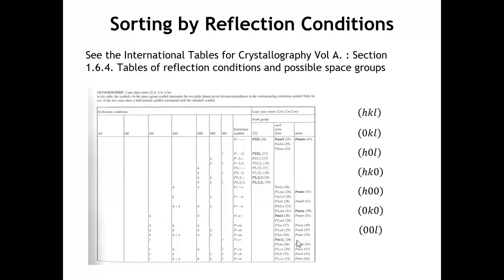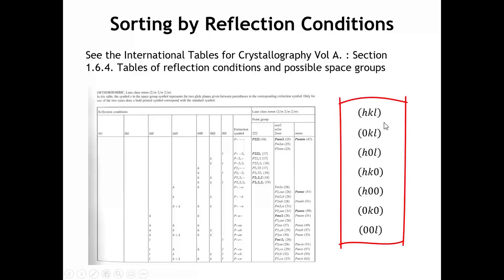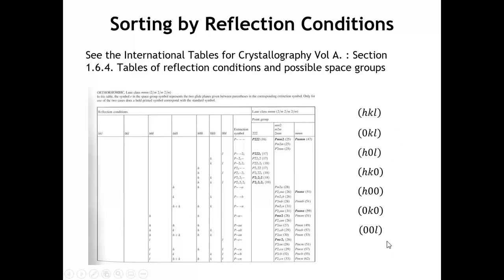In Section 1.6.4 there are tables of reflection conditions and possible space groups for every crystal system. What I show here is a portion of the table for an orthorhombic crystal. We have to divide the reflections into different categories and see what might be missing. For orthorhombic systems, we divide them into seven categories: HKL — every reflection, telling us about lattice centering — then 0KL, H0L, and HK0, which tell us about glide planes, and then H00, 0K0, and 00L, which tell us about screw axes.